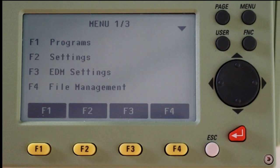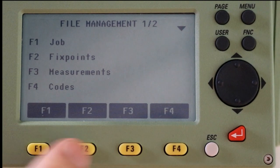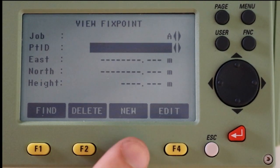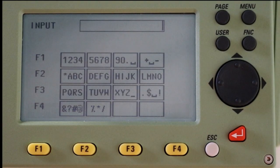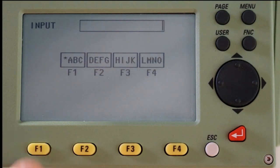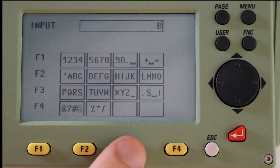Next we have to enter and save the points we wish to backsite to. To do this, we press menu, F4 for file management, and then F2 for fixed points. At the top you will see the job name this data will be saved under. Next we need to enter the point ID. For this, I will be using BS1 as a reference for my first backsite point. I will give it the coordinates 1000, 1000, and a height of 100.